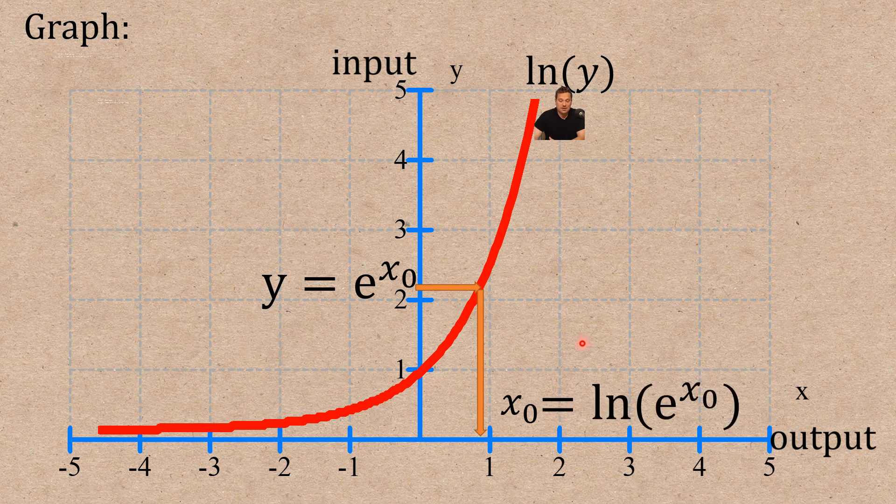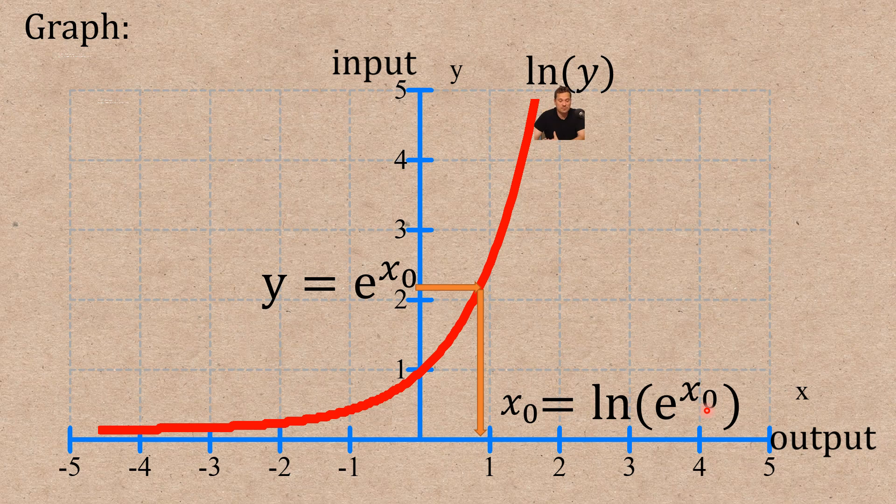So in other words, x sub zero is equal to ln of e to the x sub zero. I hope you really got the essential idea just now. I simply took that e to the x and I'm reading the graph in the opposite direction, which means that the ln of y, in other words, it becomes ln of e to the x sub zero, but that's just taking you back to your starting value of x sub zero. So what is this telling us?